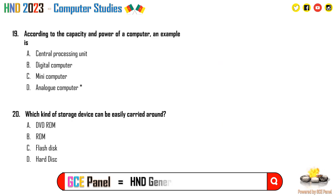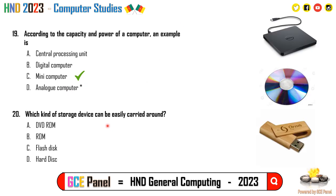Question 19: According to capacity and power, an example is a mini computer. We have supercomputers, mini computers, and others classified by power. The key is mini computer. Question 20: Which storage device can be easily carried around? The answer is the flash disk or USB drive. Section A can be answered in 10 to 20 minutes.